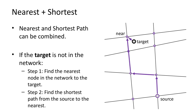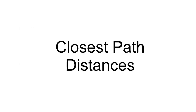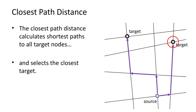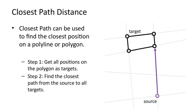Next, we will look at a variant of the shortest path, which we will refer to as the closest path. The closest path analysis calculates the distance to the closest target. It first calculates shortest paths to all target nodes and then selects the closest target. This function is a convenience function — it avoids the need to create a loop yourself and iterate through all the target nodes. The closest path can be used in any situation where multiple targets need to be analyzed. In this example, the function is used to find the closest path distance from a source node to all nodes that make up a polygon.